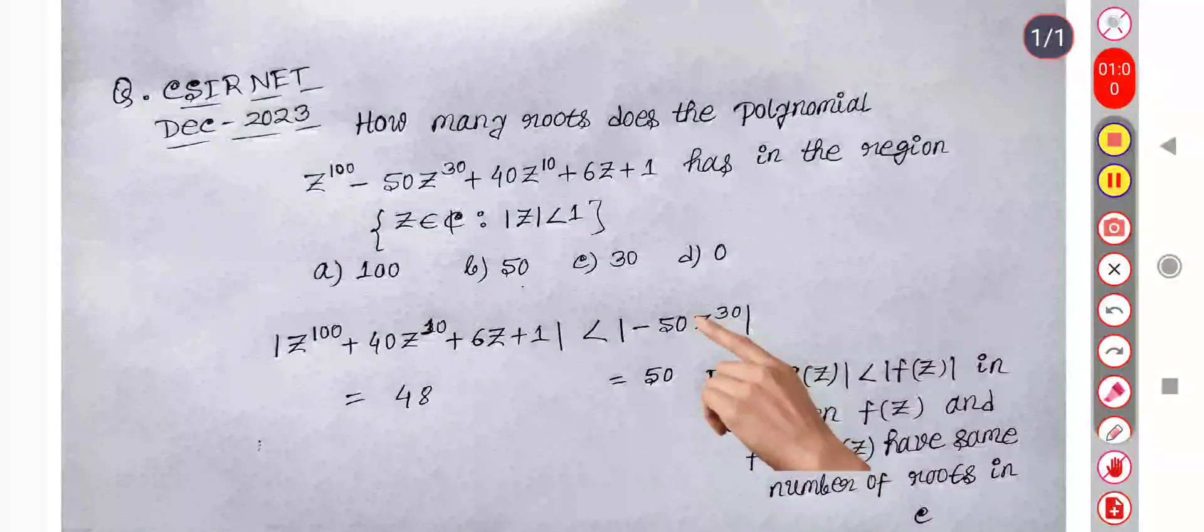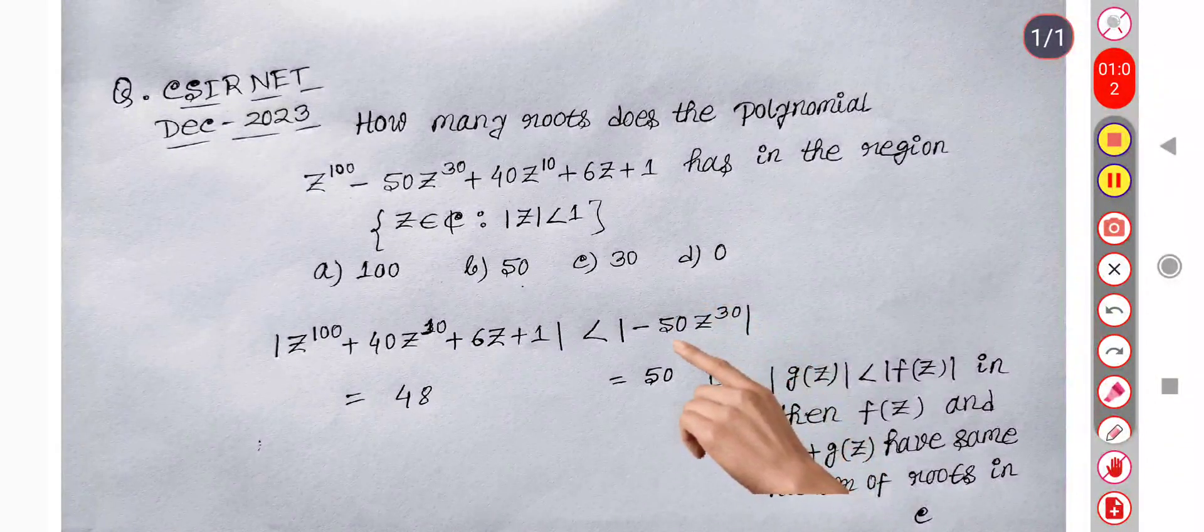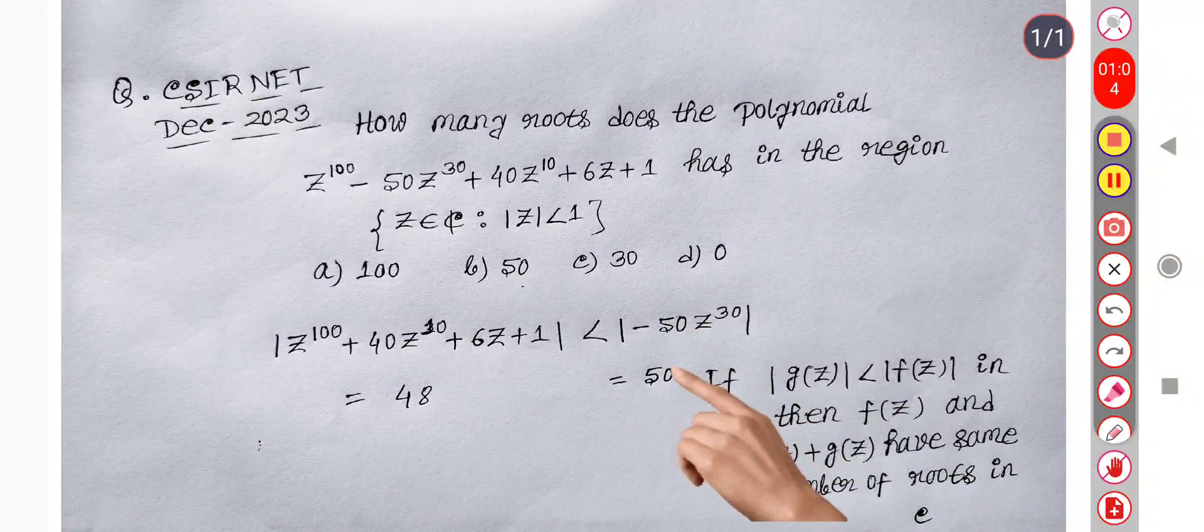If we put z equal to 1, then we get mod of minus 50, so 50.